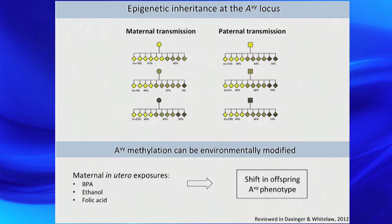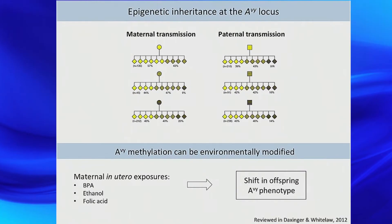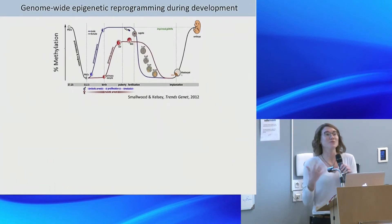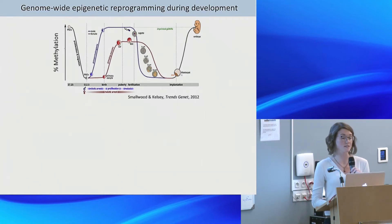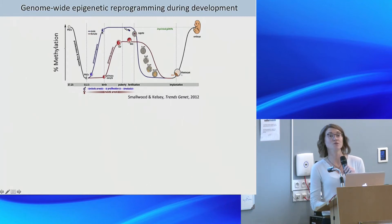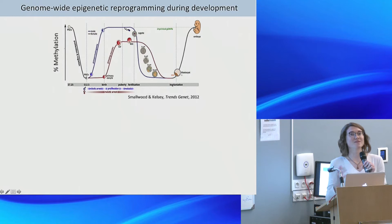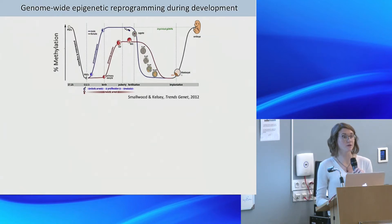That said, it has been shown that methylation at this locus is environmentally susceptible. Exposing pregnant females to BPA (bisphenol A found in plastics), ethanol, and folic acid have all been shown to shift the distribution of coat colors in the offspring. This is why this inheritance of coat color is so striking — in mammals, we see two rounds of genome-wide epigenetic reprogramming during development: during primordial germ cell production of sperm and oocytes, and again during early embryogenesis.